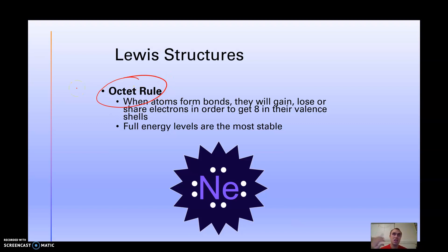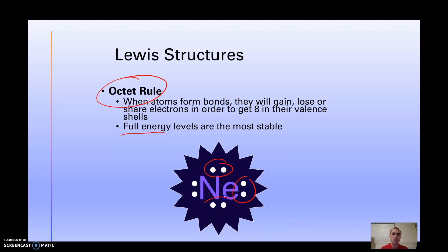There's a thing called the octet rule. 'Oct' means eight — like octopus, octagon. When things bond, they need eight electrons in their valence shell, their outermost electrons. These energy levels, when they are full, they are stable. That's why things bond — to become more stable. Noble gases on the far right of the periodic table already have eight valence electrons, so they don't bond with anything.